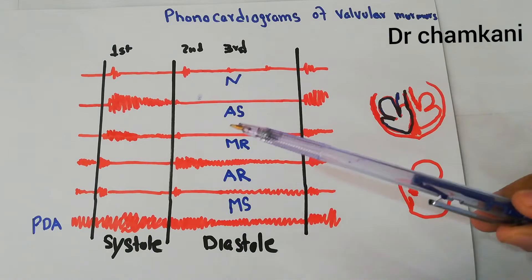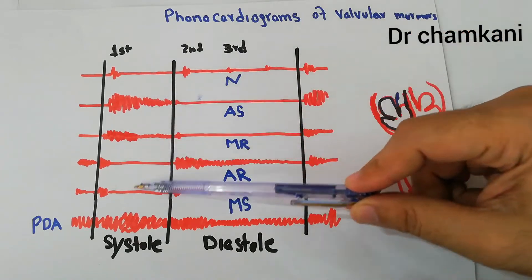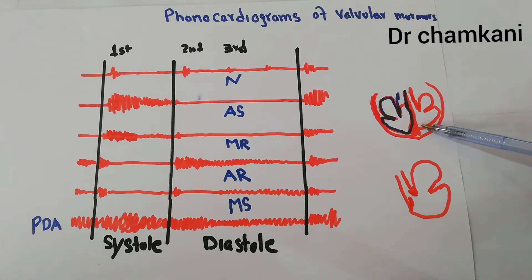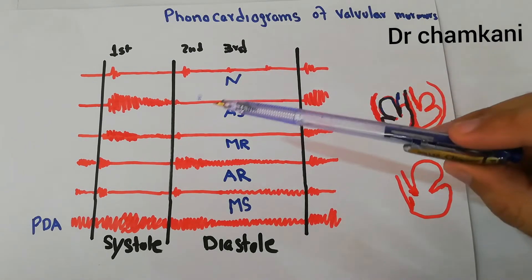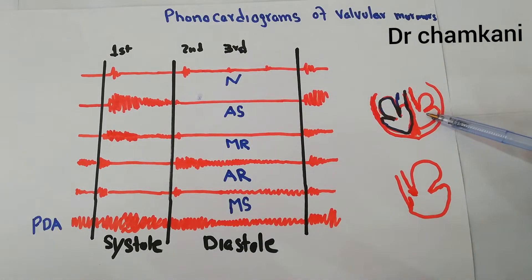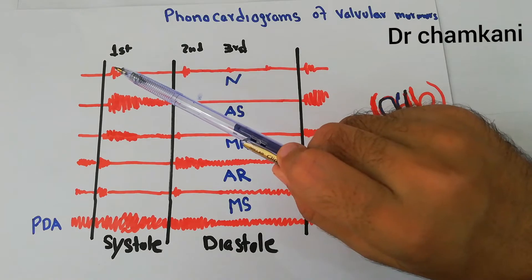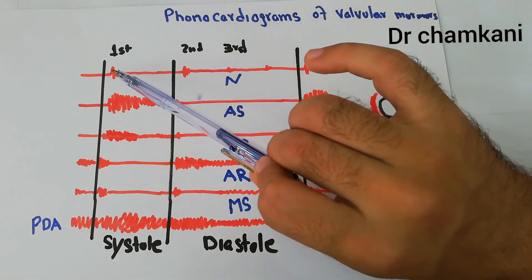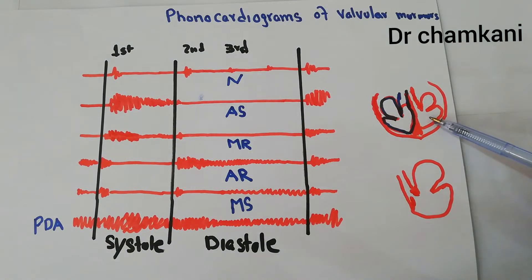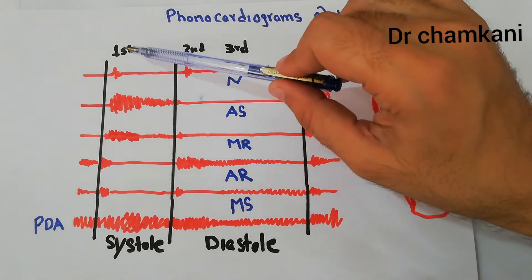In this phonocardiogram we have the systole — this portion shows the systole — and here we have the diastole. In the systole, the right ventricle and the left ventricle are contracting. In diastole, the left and right ventricles are relaxing. In the normal heart, we hear the first heart sound just at the start of the systole, as soon as the right and left ventricles contract, causing closure of the tricuspid and mitral valves.